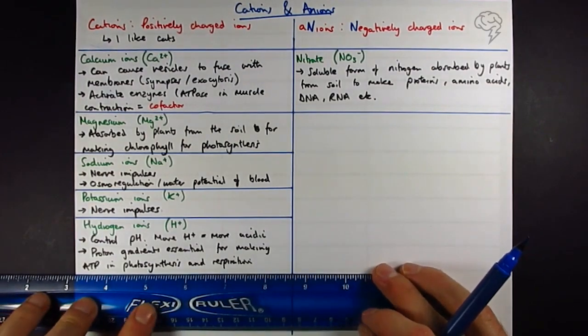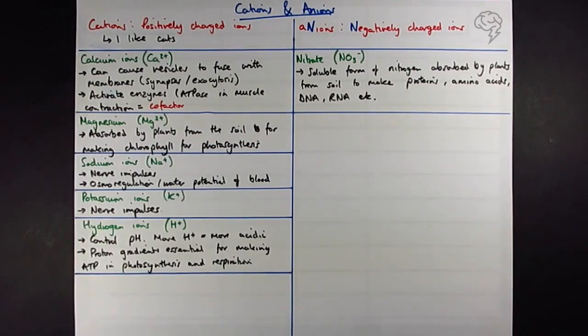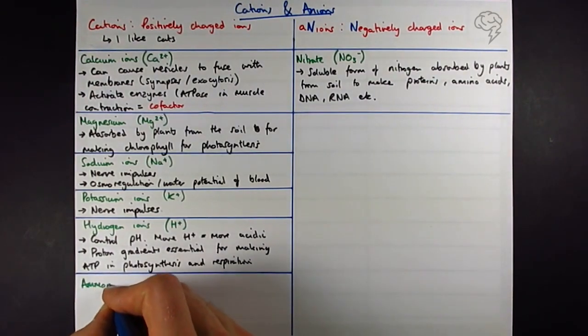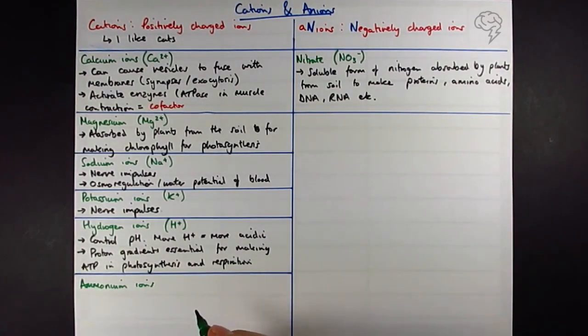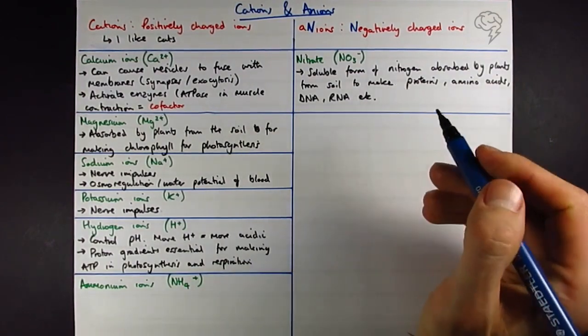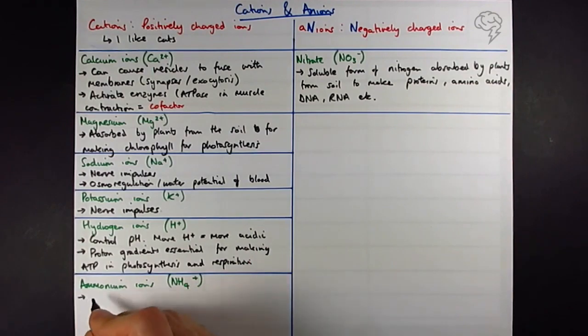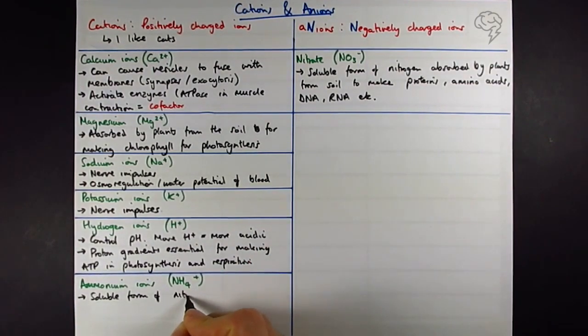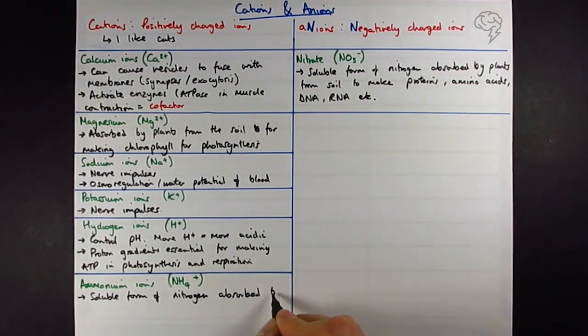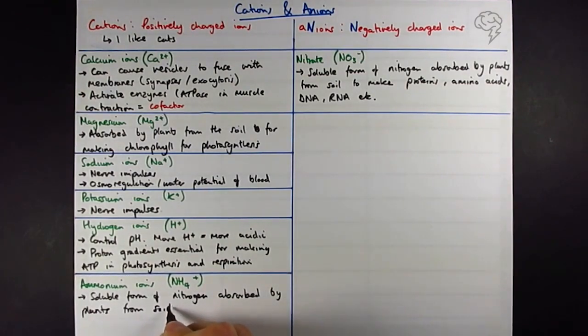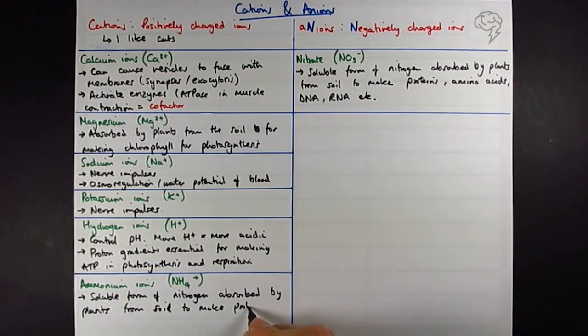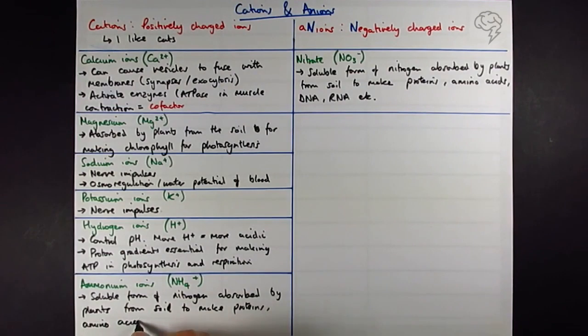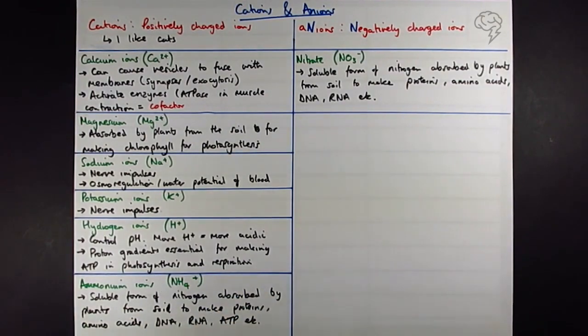And last but not least, one that you actually might not have come across as much throughout the course, and that's ammonium ions. Now these guys are NH4+. This is another type, another soluble form of nitrogen that's also used by plants. You can assume the same as this. It's just a different form of absorbable nitrogen. Anything that a plant has, any molecule a plant has, that contains nitrogen, it can absorb ammonium from the soil and then make it from there.